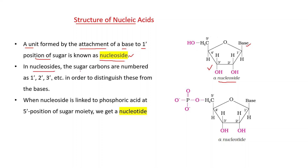In nucleosides, the sugar carbons are numbered as 1', 2', 3', etc., in order to distinguish these from the bases. When a nucleoside is linked to phosphoric acid at the 5' position of the sugar moiety, we get a nucleotide.